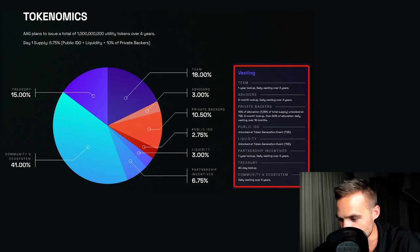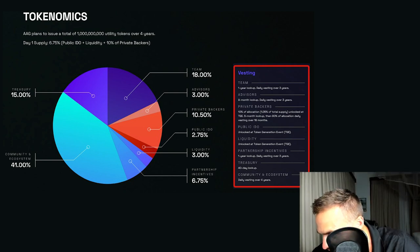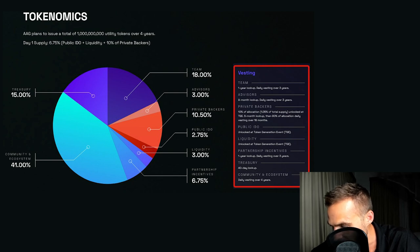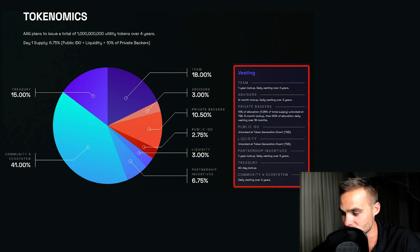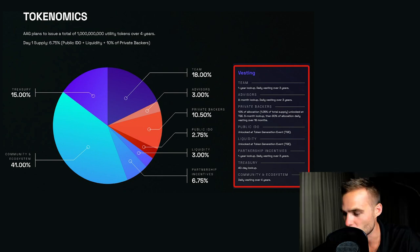For example, this is a crypto called AAG — it has their vesting schedule right here, and generally you can see this in their white paper. The team has a one-year lockup, then daily vesting over three years, so for one year they're not able to claim any of their tokens, and then over three years they're slowly released — which is pretty good. For advisors, there's an eight-month lockup and daily vesting over three years. For private backers, 10% was allocated to private investors, unlocked at the token generation event, with a six-month lockup, and then 90% of the allocation over the course of 18 months.